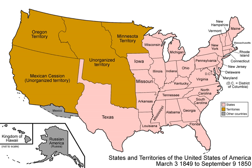Upon Clay's instruction, Stephen Douglas divided Clay's bill into several smaller pieces and narrowly won their passage, over the opposition of radicals on both sides.